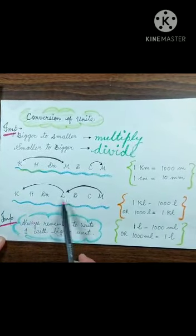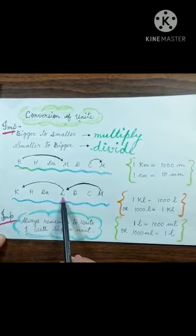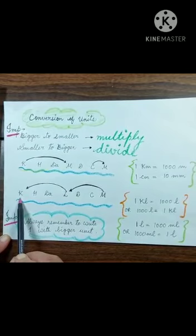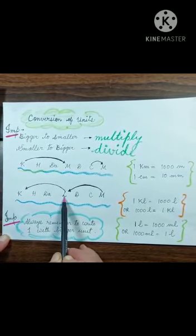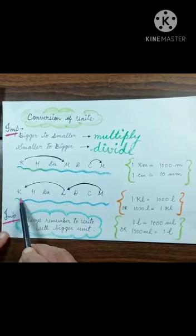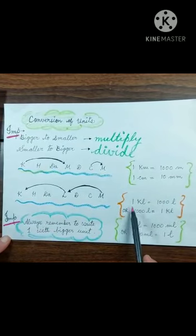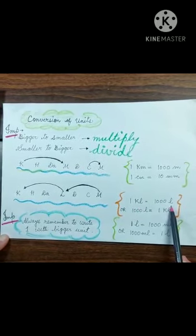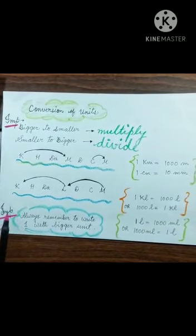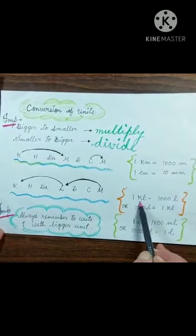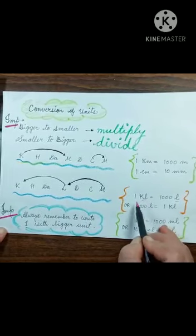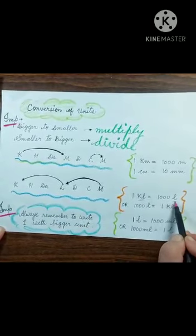Liter is given and you have to go to kiloliter. From liter going backward: one, two, three steps. That becomes one thousand. So one kiloliter equals one thousand liters. Remember: one is always written with the bigger unit. Here kiloliter is bigger, so write one with kiloliter and one thousand with liter.